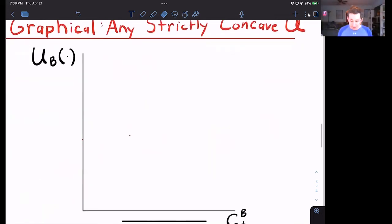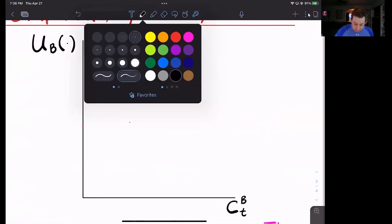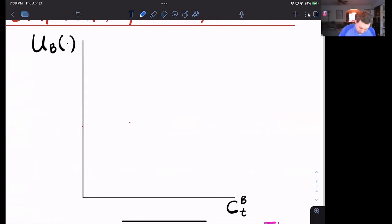So let's use just any strictly concave utility function, and we'll use Bill for this example. So we've got Bill's utility on the y-axis, and we've got Bill's consumption on the x-axis. If I'm going to draw a strictly concave utility function, that is going to be a utility function that is increasing, but at a decreasing rate, so it's going to look something like this.